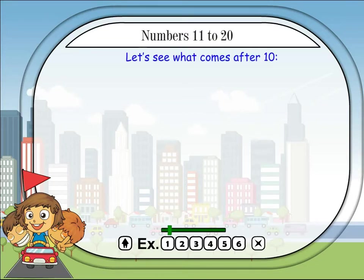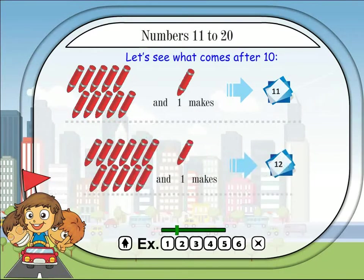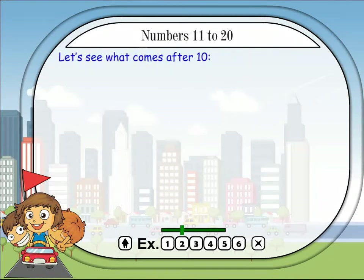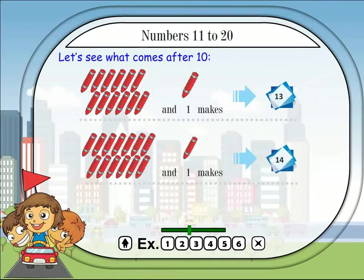Numbers eleven to twenty. Let's see what comes after ten. Ten and one makes eleven. Eleven and one makes twelve. Twelve and one makes thirteen.